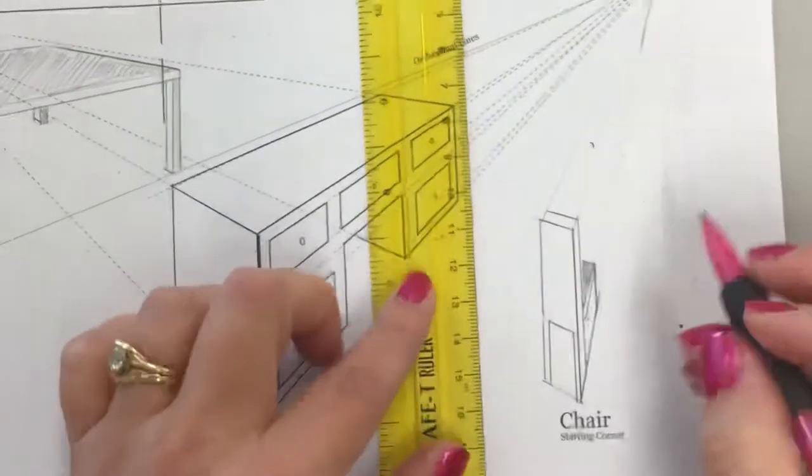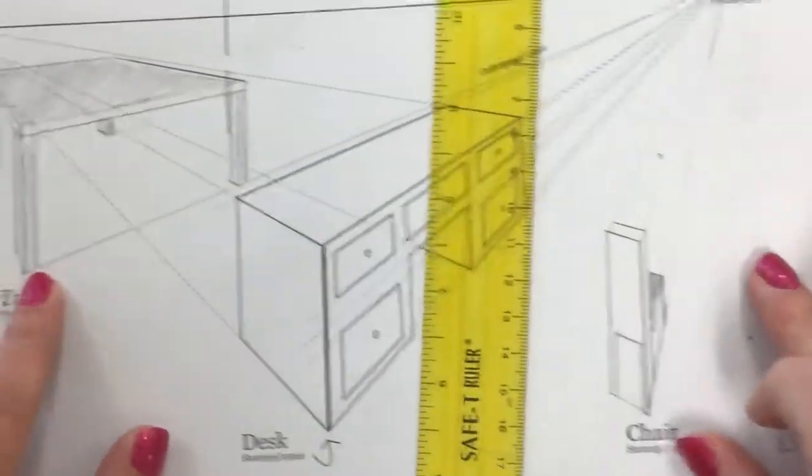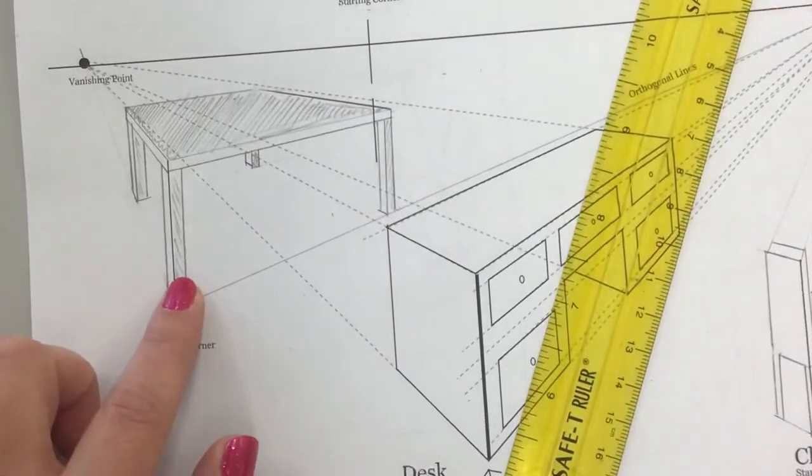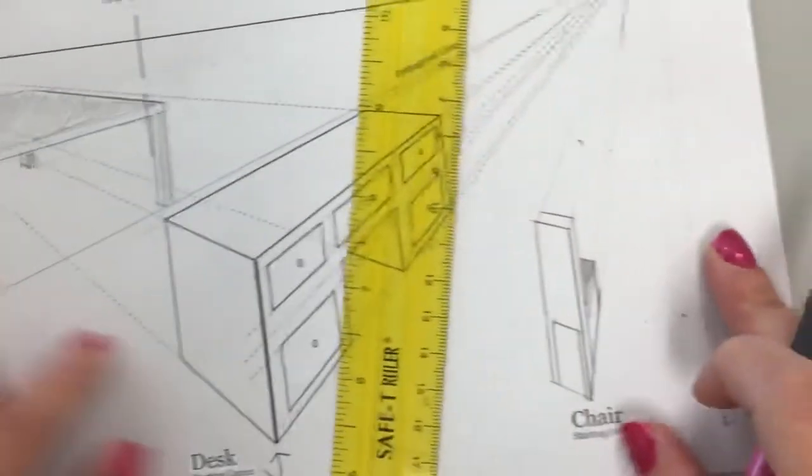These lines are finished. And then similar to the table, the legs are not totally flat. You need to have some sort of 3D look to them.